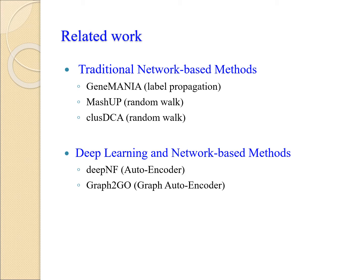The most related methods are network-based methods. Note that the PPI network is not connected across all different species. GMAI, Mashup, and SDCA are three representative traditional network-based methods. GMAI is based on a label propagation algorithm, and Mashup and SDCA are both based on a modified random walk. DeepNF and Graph2Go are two representative deep learning network-based methods. Both use an autoencoder or graph autoencoder to get a semantic representation of each protein based on the network, and then train SVM or DNN based on these representations.